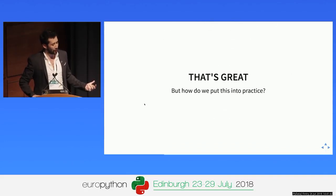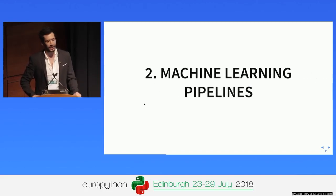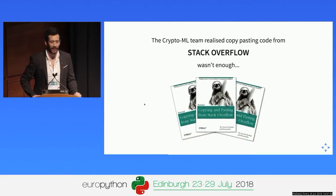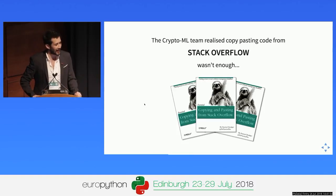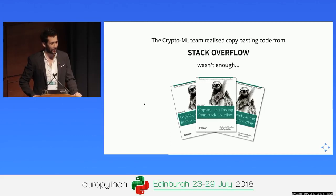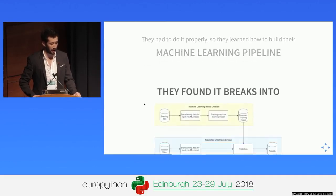Now we know conceptually what we need to do, but how do we put it in practice? The CryptoML guys found this concept of machine learning pipelines. They were copy-pasting a lot of code from Stack Overflow, but realized they needed to understand how it works — not just throw different amounts of data hoping it would converge into something valuable. In order to do it properly, they saw they needed to build a more mature infrastructure around their machine learning.